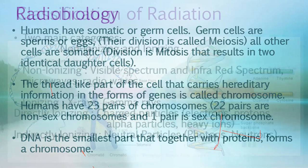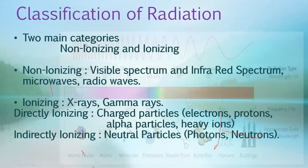Radiation is classified into two main categories: non-ionizing (visible spectrum, infrared, microwaves, radio waves) and ionizing (x-rays, gamma rays, alpha and beta particles). Ionizing radiation is further divided into directly ionizing — charged particles such as electrons, protons, alpha particles, and heavy ions — and indirectly ionizing neutral particles such as photons and neutrons.